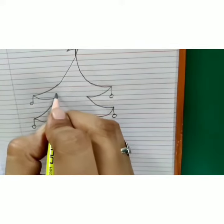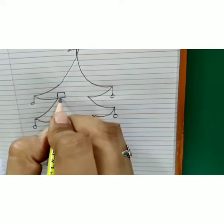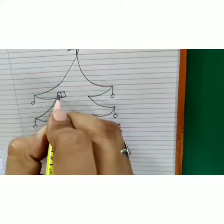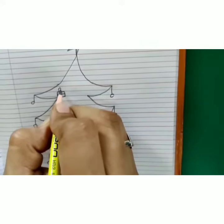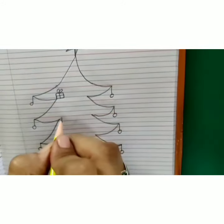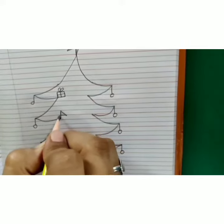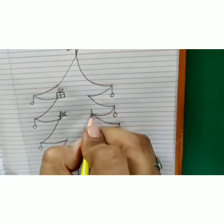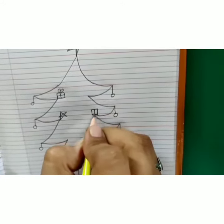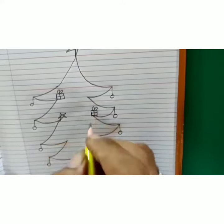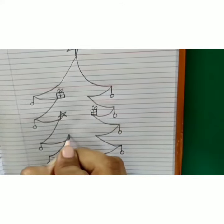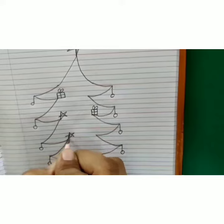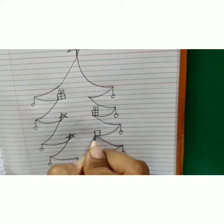Inside this draw a small gift square. Then standing line, sleeping line. And here draw a curve. Here also draw a star. Then gift, star, gift.